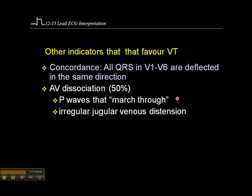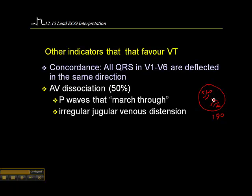AV dissociation is also supportive of V-tach. In about 50% of ventricular tachycardia, there's an ectopic impulse in the ventricle firing at, say, 180, while the SA node continues to fire at around 60. In about 50% of V-tach cases, the wave of depolarization from the ectopic focus reaches the atria, causing them to depolarize and contract as well. Consequently, we see this wide-complex tachycardia with actual P waves that march through at a slower rate than the ventricular complexes.